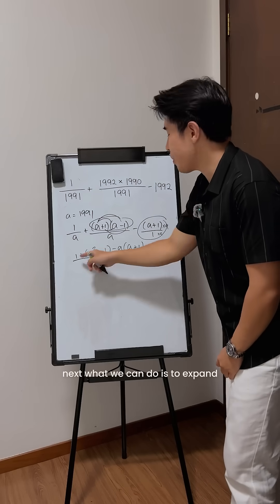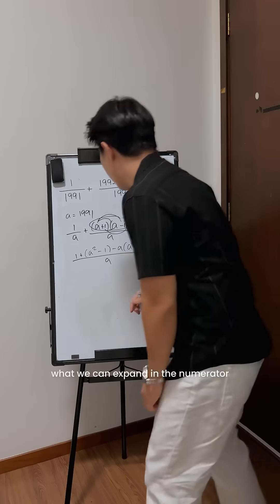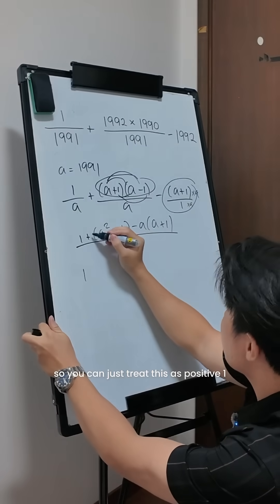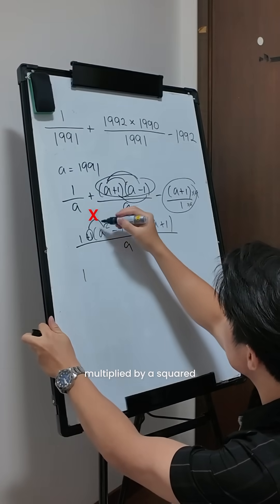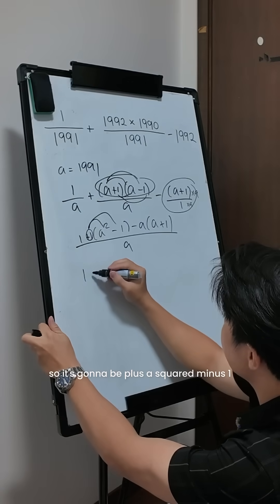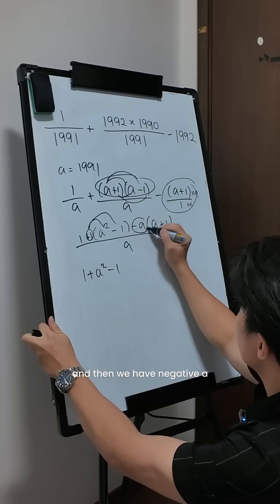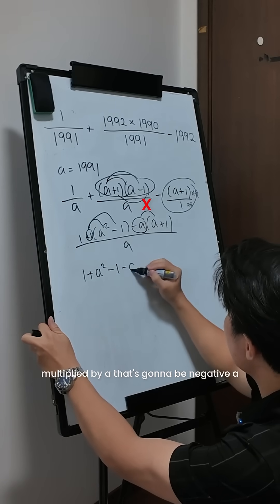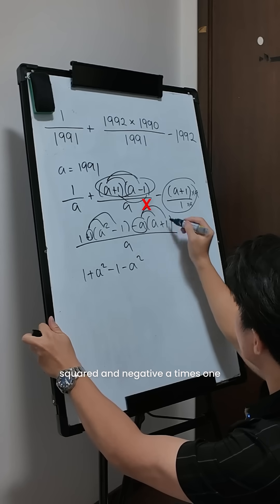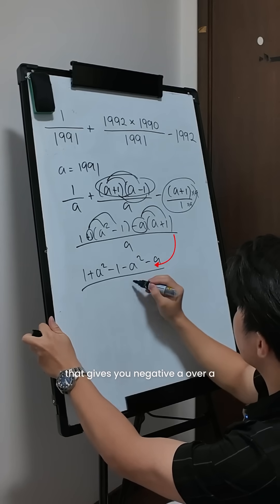Next, what we can do is to expand what we can expand in the numerator. Therefore, it's gonna be 1. So you can just treat this as positive 1 multiplied by a squared and negative 1. So it's gonna be plus a squared minus 1 and then we have negative a multiplied by a that's gonna be negative a squared and negative a times 1 that gives you negative a over a.